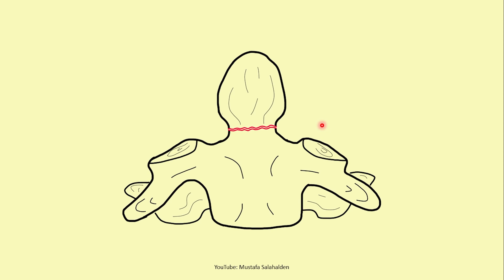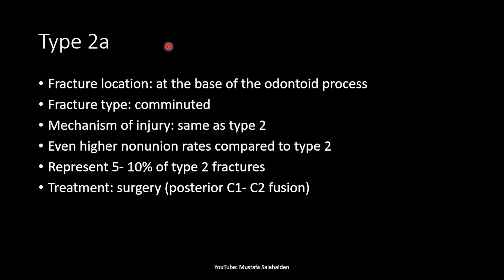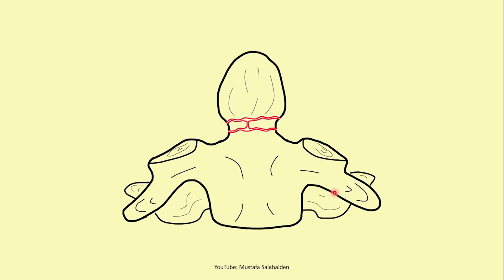Type 2a fracture location is at the base of the odontoid process, the same as Type 2, but this time it is a comminuted fracture. The mechanism of injury is either hyperflexion or hyperextension. It has even higher non-union rates compared to Type 2 and represents 5 to 10 percent of Type 2 fractures. Treatment is surgery: C1-C2 fusion by posterior approach.